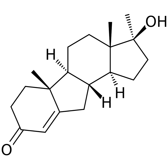Benorterone, also known as 17-alpha-methyl-B-nortestosterone or as 17-alpha-methyl-B-nor-androst-4-en-17-beta-ol-3-one, is a synthetic androstane steroid and a derivative of testosterone. Specifically, it is the C-17-alpha-methyl and B-nor analog of testosterone and the B-nor analog of methyltestosterone.